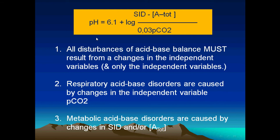According to Henderson-Hasselbalch, pH is governed by the relationship between bicarbonate and carbon dioxide. However, bicarbonate equals the strong ion difference minus the total weak acids. According to Stewart, pH is a dependent variable — just like bicarbonate — and it depends on independent factors: strong ion difference, total weak acids, and carbon dioxide.